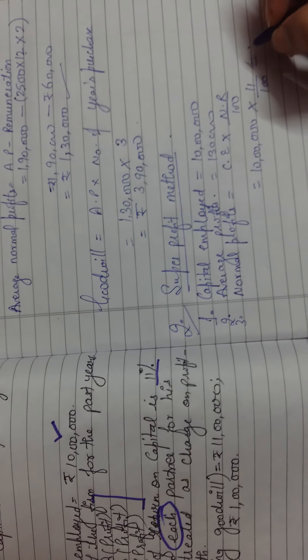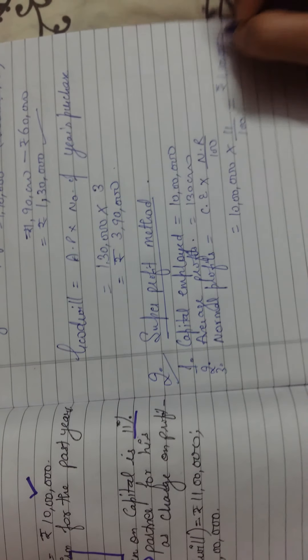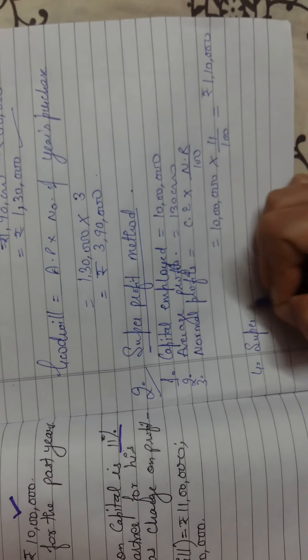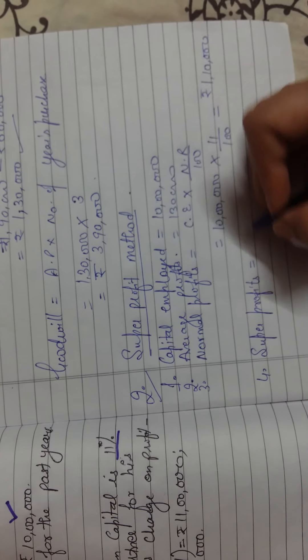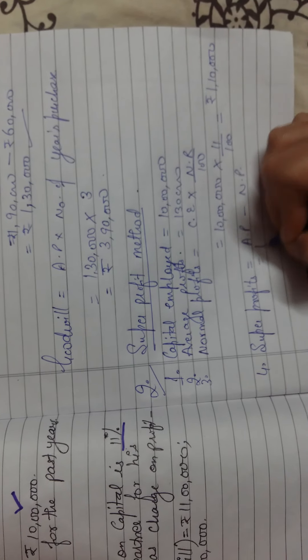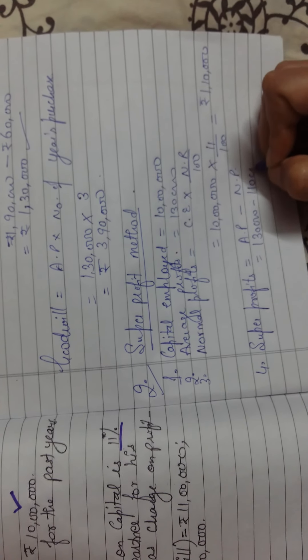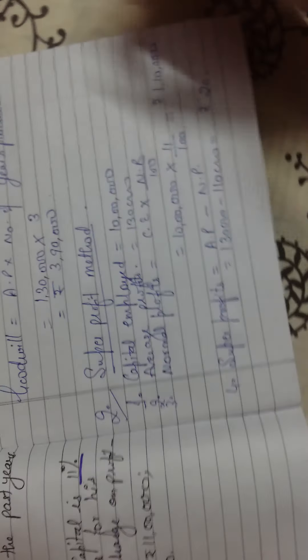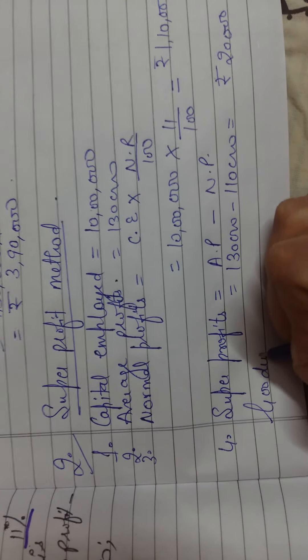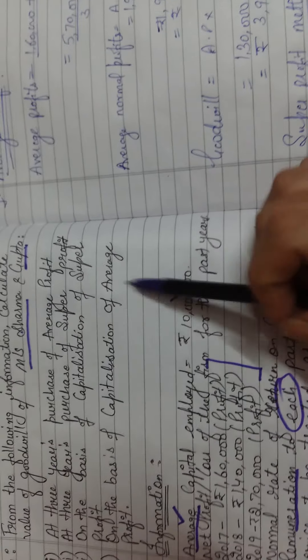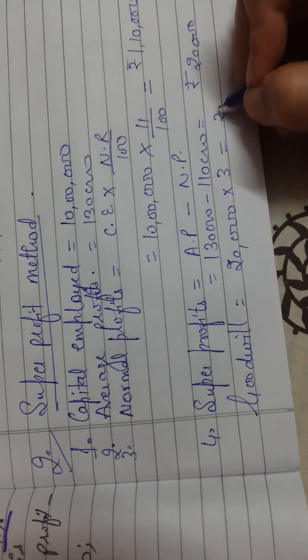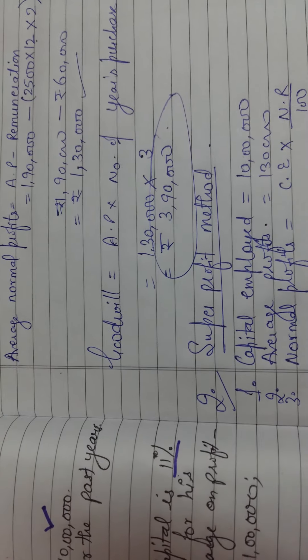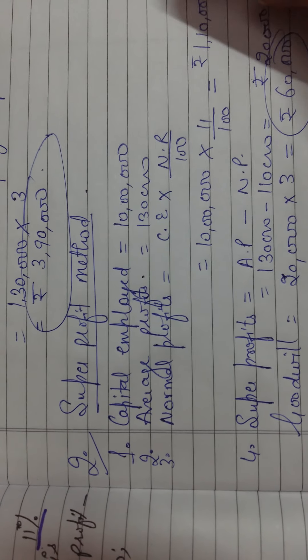Normal profits are rupees one lakh ten thousand. Step four: calculate super profits. Super profits equal average profit minus normal profit — one lakh thirty thousand minus one lakh ten thousand — which gives rupees twenty thousand. Goodwill equals super profits multiplied by number of years purchase, that is twenty thousand multiplied by three. The value of goodwill under the super profit method is rupees sixty thousand.